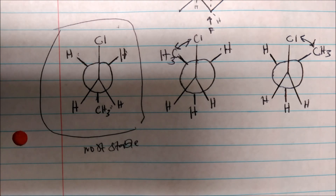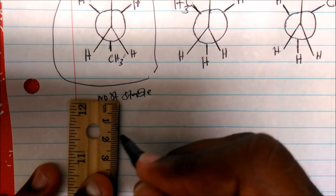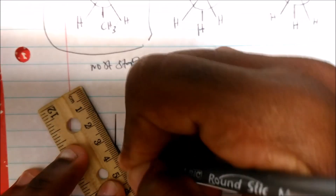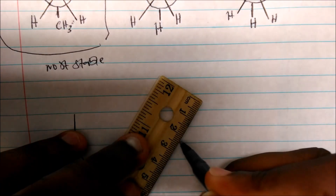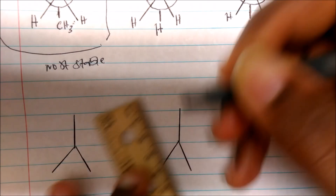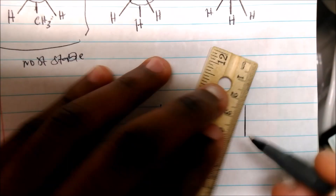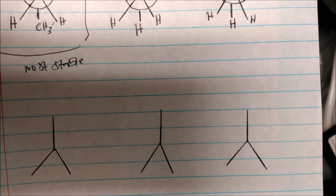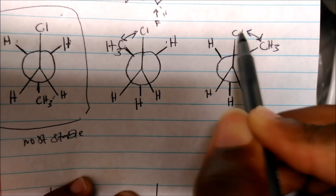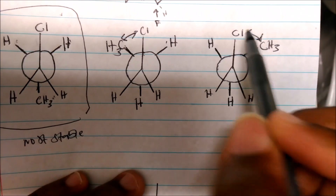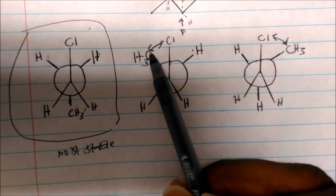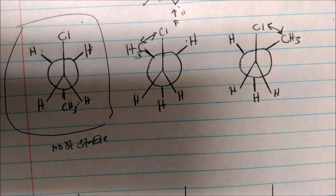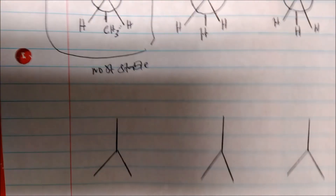Now let's look at the worst. To get the worst, we always draw what is called the eclipsed version. A quick thought on the difference between torsional and steric strain: steric strain is when you have two non-bonded groups being so close together — right where you have gauche, you actually have steric strain because those atoms are so close they cause high energy. Torsional strain is when you're forcing atoms to occupy the same space — we're going to see torsional strain when we draw the eclipsed versions.